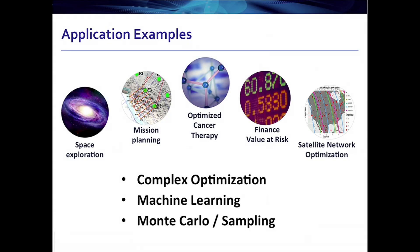The types of problems we focus on for quantum computing fall into three categories: complex optimization, machine learning — which is one of the most exciting things going on in AI today — and sampling or Monte Carlo simulation, which is used very heavily in finance to do things like value-at-risk calculation, portfolio analysis, and so on.